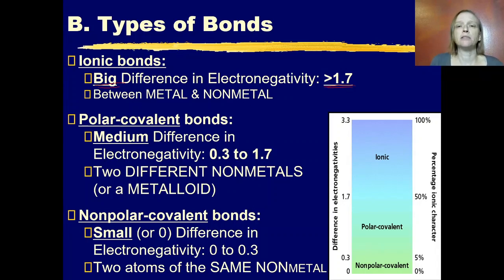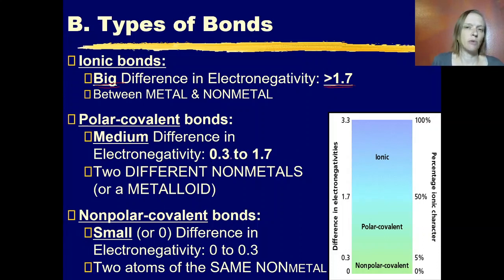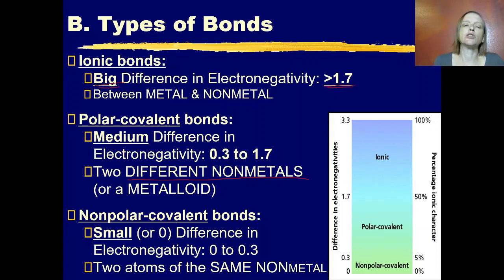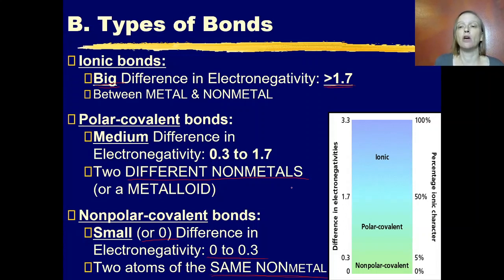Polar covalent bonds are in between ionic and purely covalent bonds, with a medium difference in electronegativity somewhere between 0.3 and 1.7. This tends to happen when you have two different non-metals or a non-metal bonding to a metalloid. You get purely covalent bonds when there's a very small or zero difference in electronegativity — in the range of zero to 0.3 — most commonly when you have two atoms of the same non-metal, for instance oxygen gas, O2.